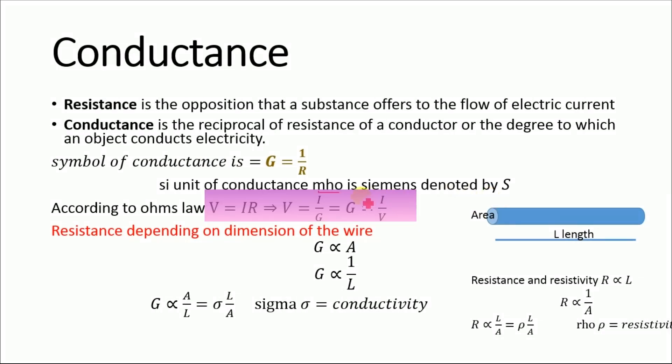According to Ohm's law, we know that voltage V equals current times resistance. In this equation, substituting the value of R equals 1 over G, we get V equals I divided by G, and G, the conductance, equals current divided by voltage.